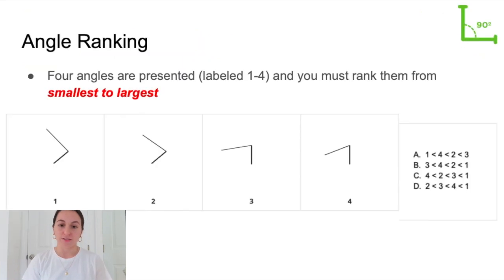So how this works is there are four angles labeled one through four and you must rank them from smallest to largest. In theory, this should be the easiest section. However, the angles can be as close as two degrees off from each other, therefore proving to be one of the harder sections. But I have some tips and tricks to help you guys out.